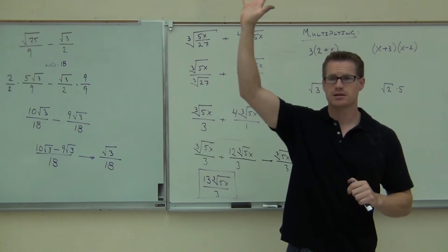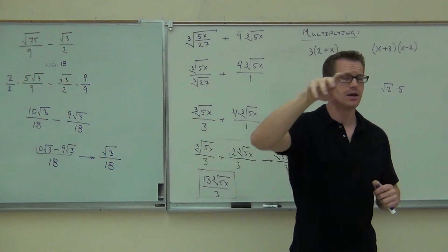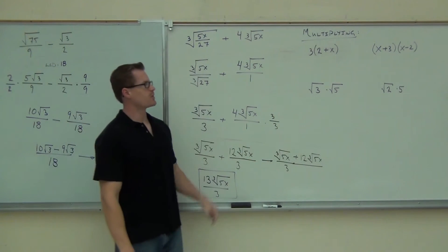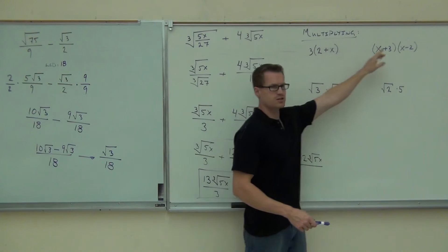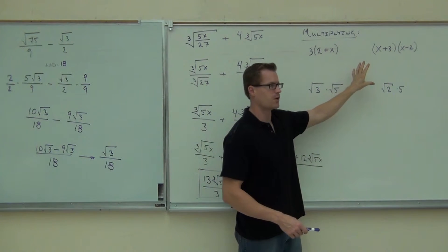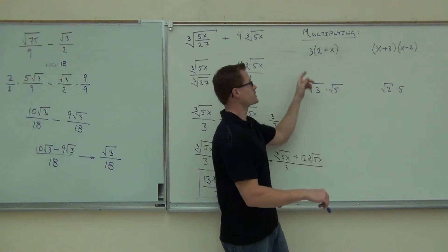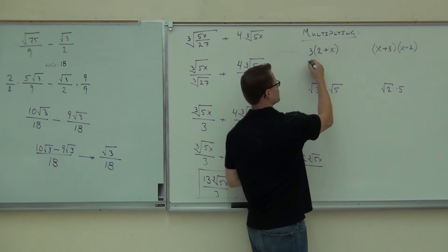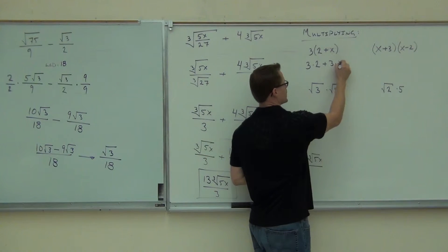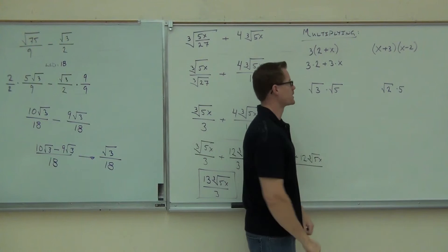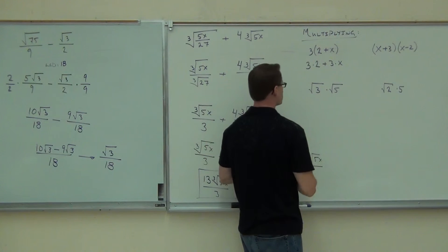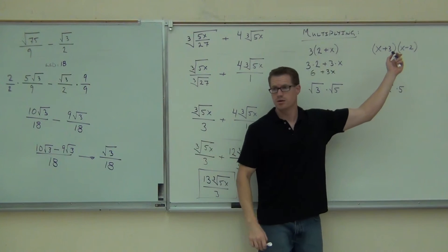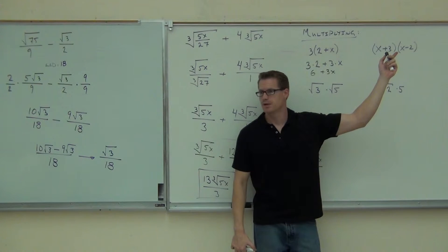Would you raise your hand if you feel okay adding and subtracting these radicals? Our idea is to simplify, get like radicals, and we just add or subtract them by the coefficients. We're going to move on to multiplying. Do you remember how to do problems like this? This is a refresher — we've done every one of these problems already in this class. How would you do this problem? Distribute your 3 — so 3 goes to the 2 and 3 goes to the x, giving you 3 times 2 plus 3 times x, which is 6 plus 3x.